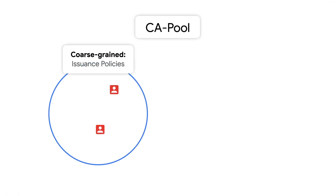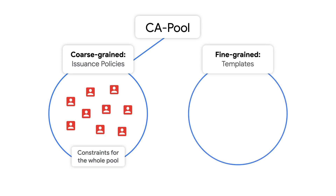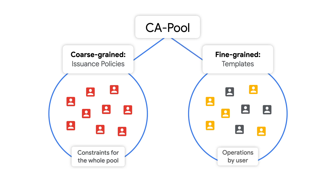Do you find yourself struggling with one-size-fits-all policy controls that don't allow for customization by different departments or needs? Policy controls enable you to control the type of certificates that your CA pool can issue. Policy controls are one of two types: there's coarse-grained, or what we generally refer to as issuance policies, which have constraints that apply to all certificate issuance from the entire CA pool; and there's fine-grained, which are represented using templates, and these determine the operations a particular user can perform on a CA pool.